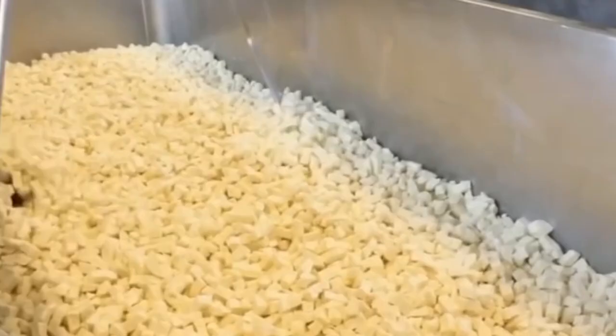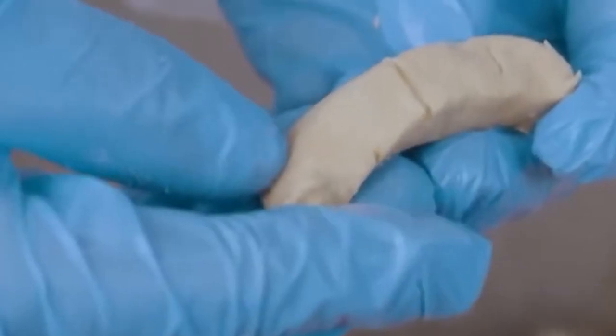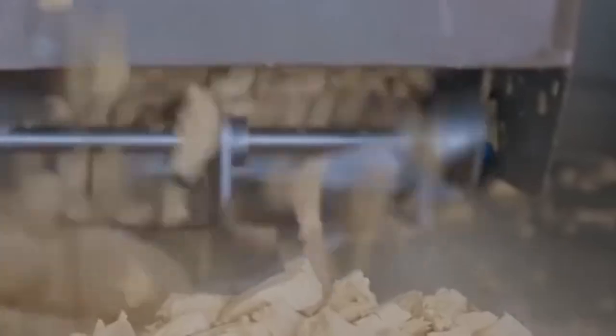Cutting the curds. Now the curds are cut into smaller pieces using wire knives. This helps more whey drain out. The size of the curds depends on the cheese. Cheddar needs bigger curds, while mozzarella needs smaller ones. Cutting helps the cheese get the right texture.